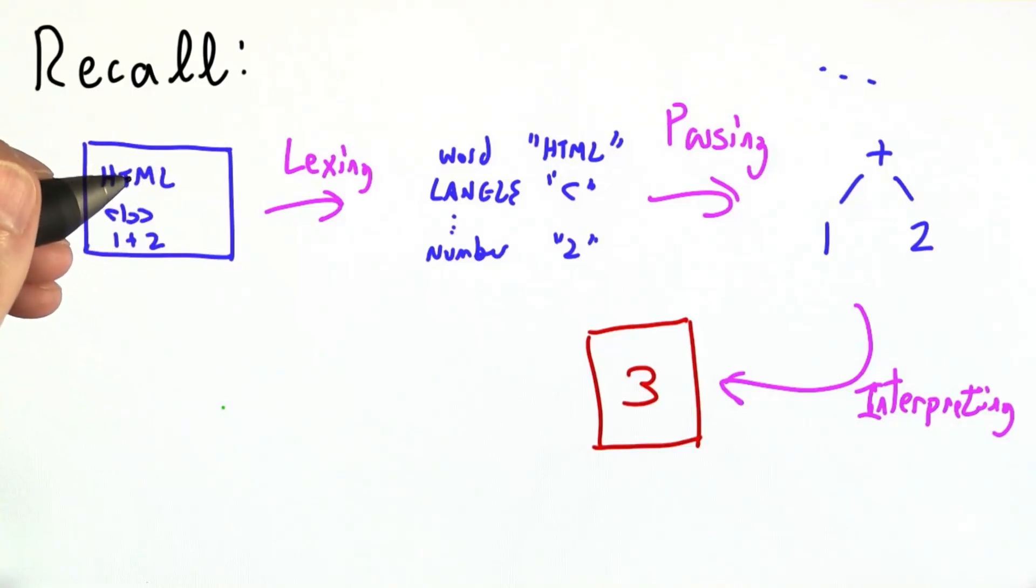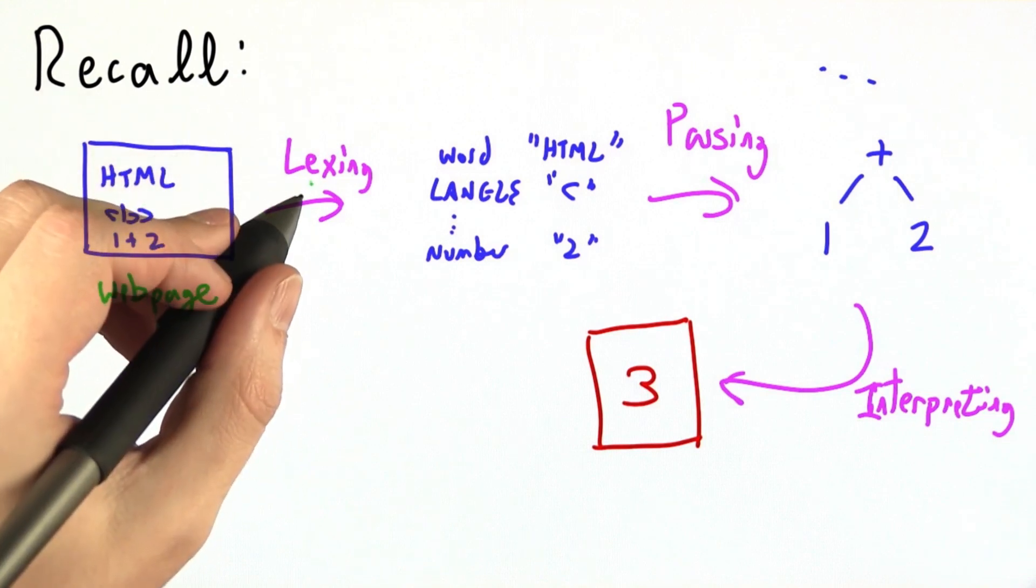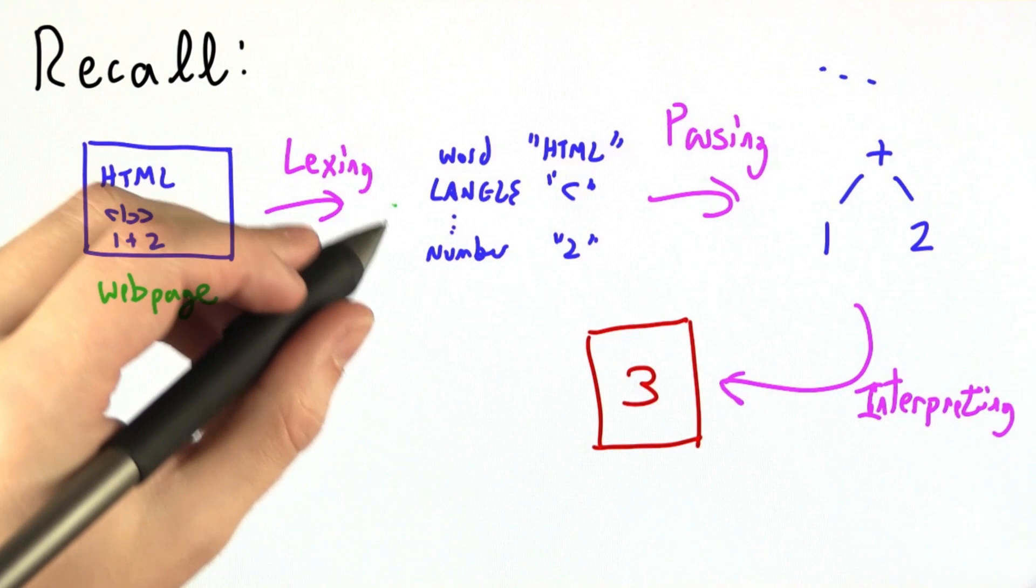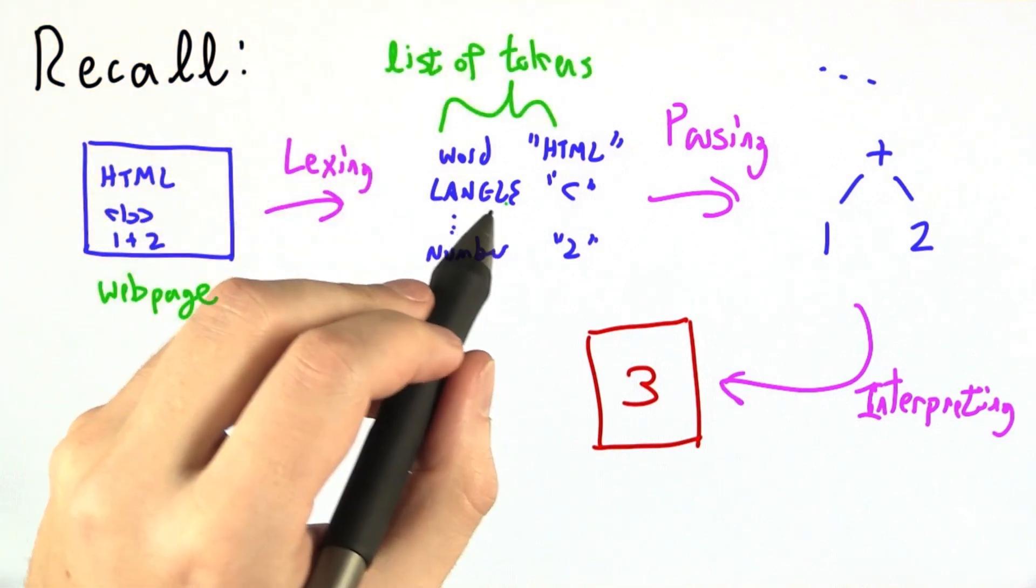Welcome back. This is Unit 6 of Programming Languages, and the story thus far is that we started with a big web page that might contain embedded JavaScript. We did lexing, or lexical analysis, to break it up into a list of tokens.